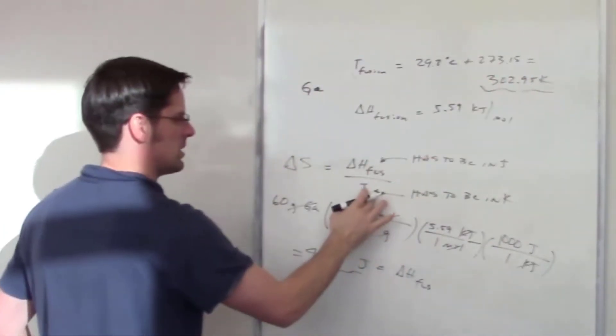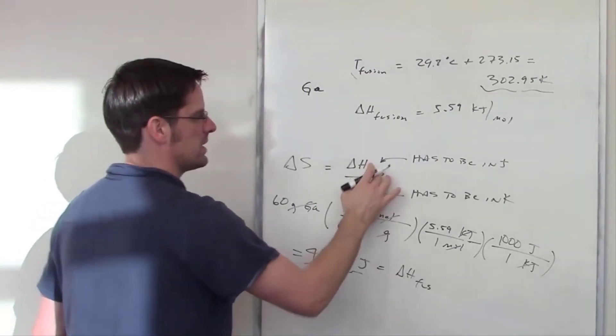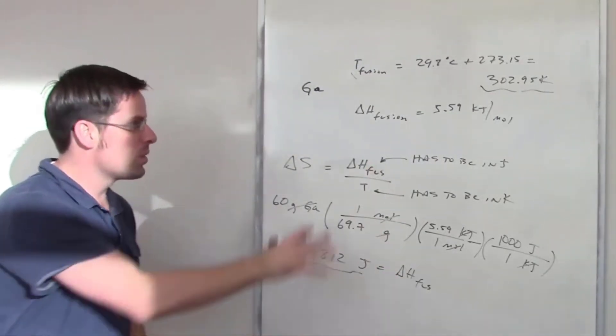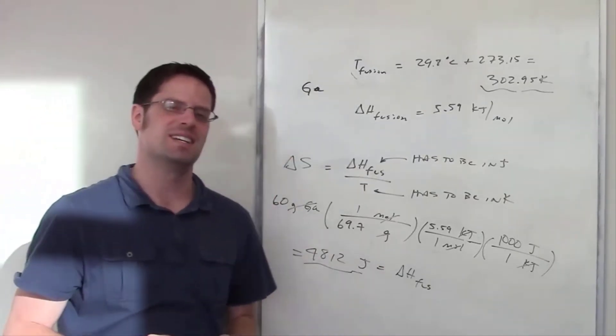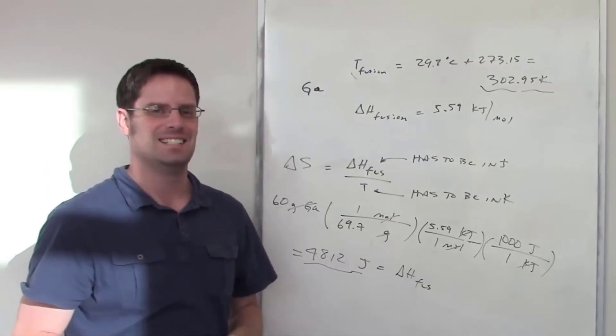Temperature of fusion is this. That goes in the denominator. My delta H fusion is this in joules. It goes in the numerator. I throw those numbers in there and that should give us the delta S for fusion for this amount of gallium.